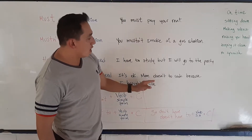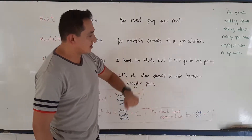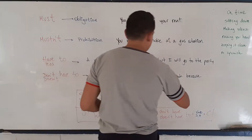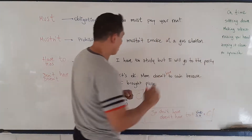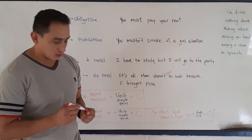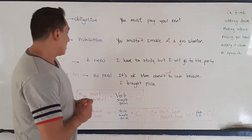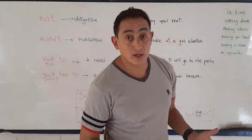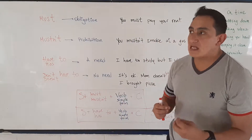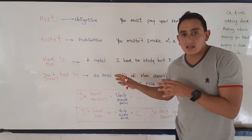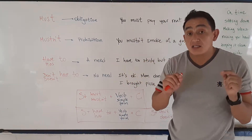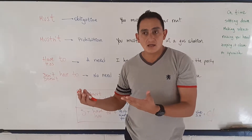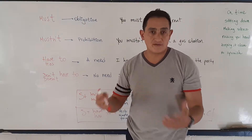It's okay. Mom doesn't have to cook — I forgot to write — doesn't have to cook because I ordered pizza. Mom doesn't have to cook. It means that she doesn't have that need, but she can make a decision of making some dinner or pizza or whatever.